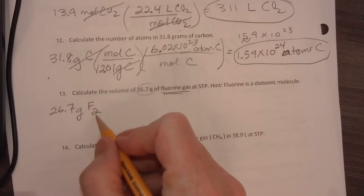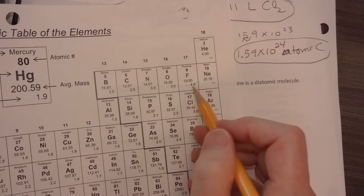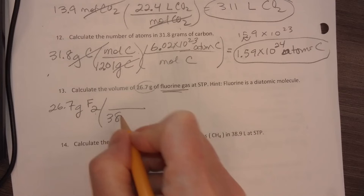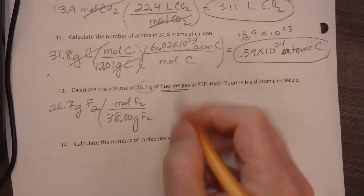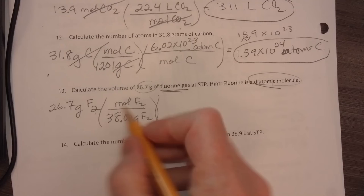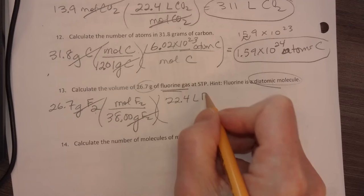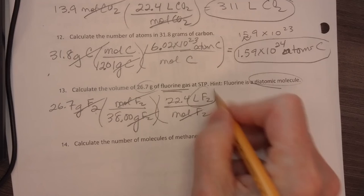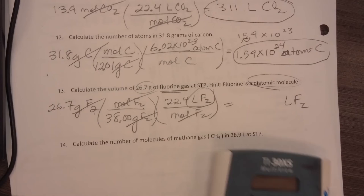Fluorine is 19, but because it's diatomic, 19 times 2 is 38. So I have to divide it by 38 grams of fluorine per mole of fluorine. Now I need to multiply by 22.4 liters of fluorine gas for every mole of fluorine gas. My moles divide out, and I now have liters as my unit, liters of fluorine gas.